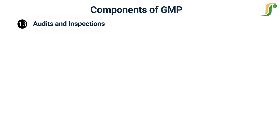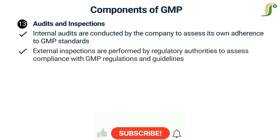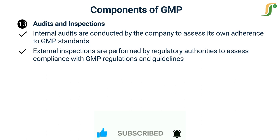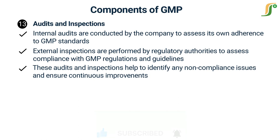The thirteenth component is Audits and Inspections. Regular audits and inspections play a significant role in ensuring GMP compliance. Internal audits are conducted by the company to assess its own adherence to GMP standards, identify areas for improvement, and implement corrective actions. External inspections are performed by regulatory authorities to assess compliance with GMP regulations and guidelines. These audits and inspections help to identify any non-compliance issues and ensure continuous improvement of the manufacturing processes.